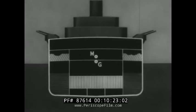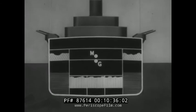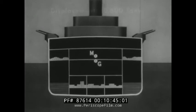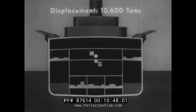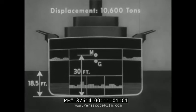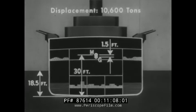We come now to the light condition. The ship has seen some action. In bombarding shore establishments, most of the ammunition has been expended; therefore, the magazines are virtually empty. More fuel and more stores have been used. The displacement is now only 10,600 tons. With the draft thus reduced to 18 and a half feet, the metacenter rises to 30 feet above the keel. But, due to the loss of weight low in the ship, G also rises, resulting in a GM of only one and one half feet.